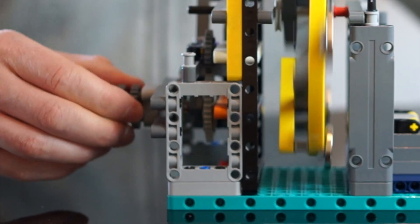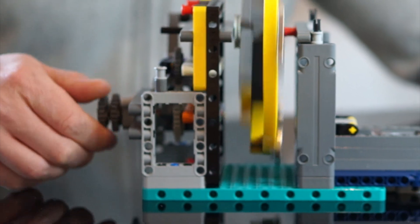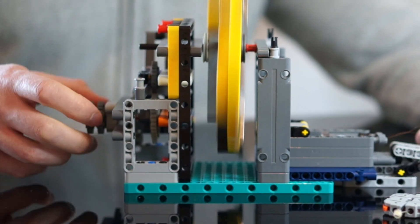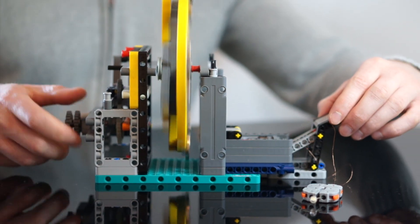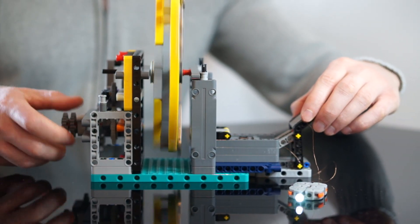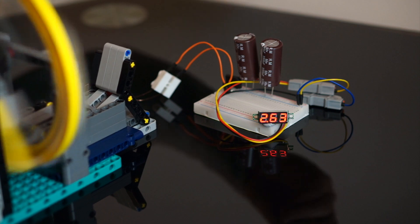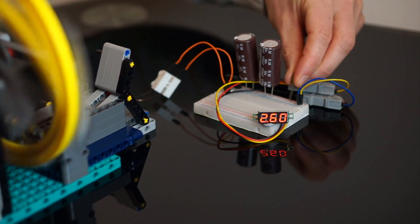Fortunately the flywheel can still be driven independently using this little wheel here. This spins the flywheel quite rapidly with a very high input to output ratio. It's important to note here that I geared this wheel up so that I can move it fast enough to generate an appreciable voltage.